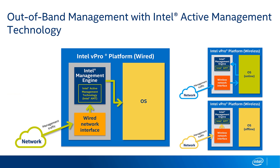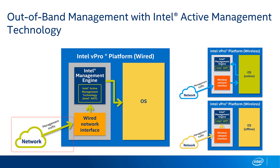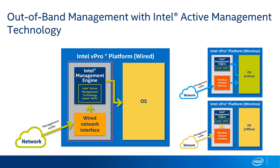A question we often get about Intel Active Management Technology is: how does it work? What do we mean when we say 'out of band'? In the larger diagram, you can see an example of what a wired platform would look like — where we have our network, management traffic coming off of that network straight into the network interface card, and that goes right to the Intel Management Engine and Intel Active Management Technology running in the chip set. All the management commands are stripped off right there, and then the balance of the traffic gets passed on to the operating system.